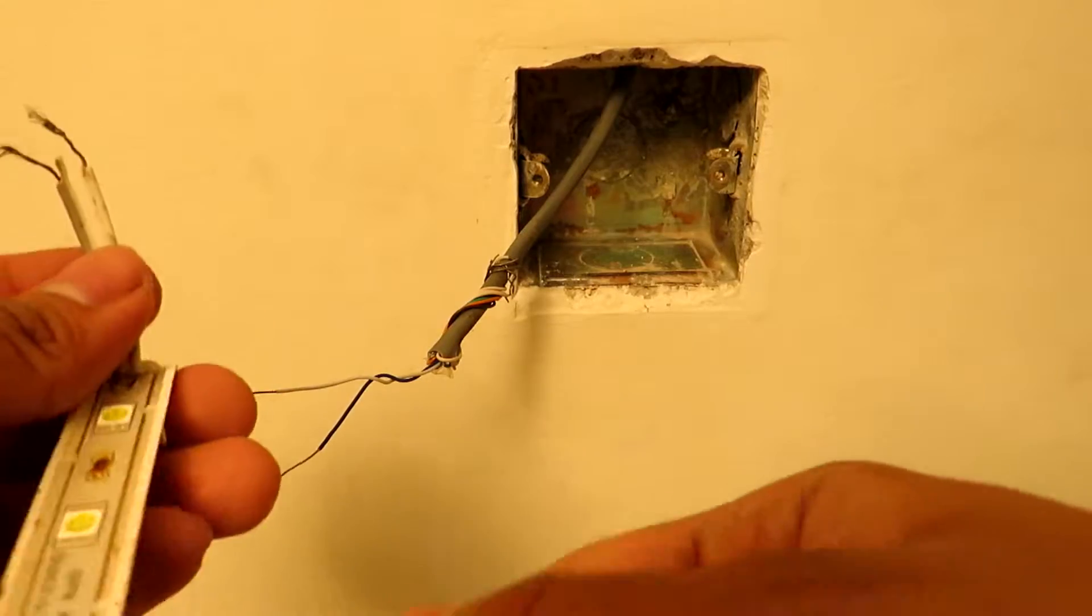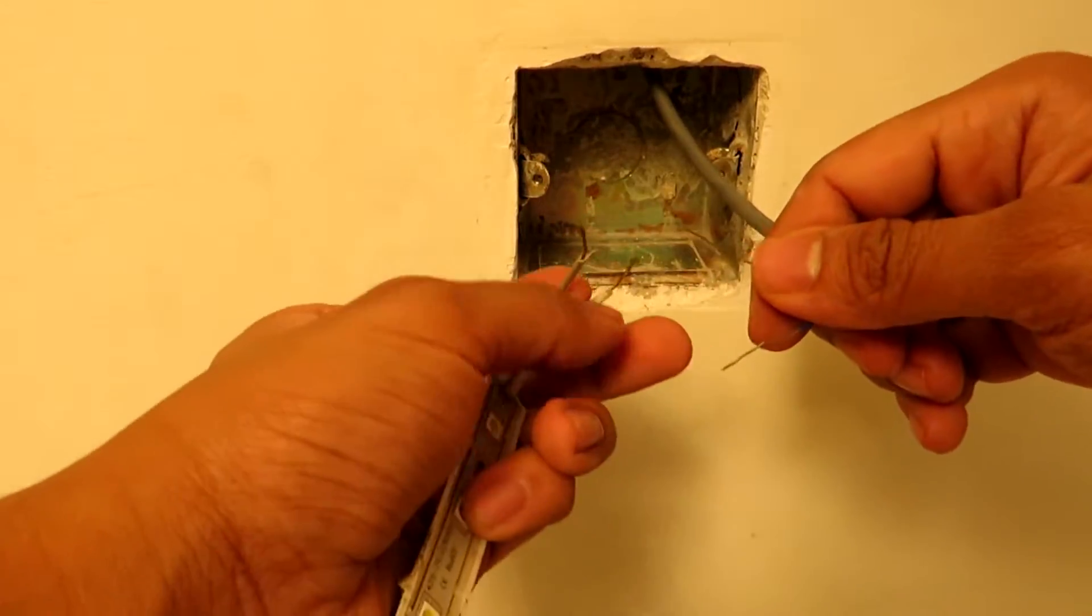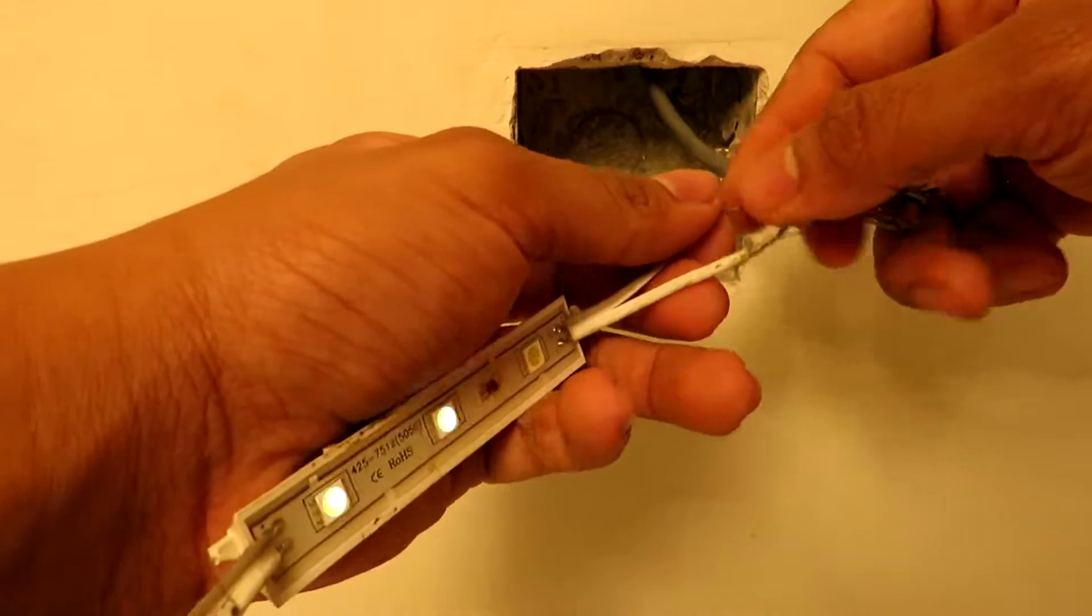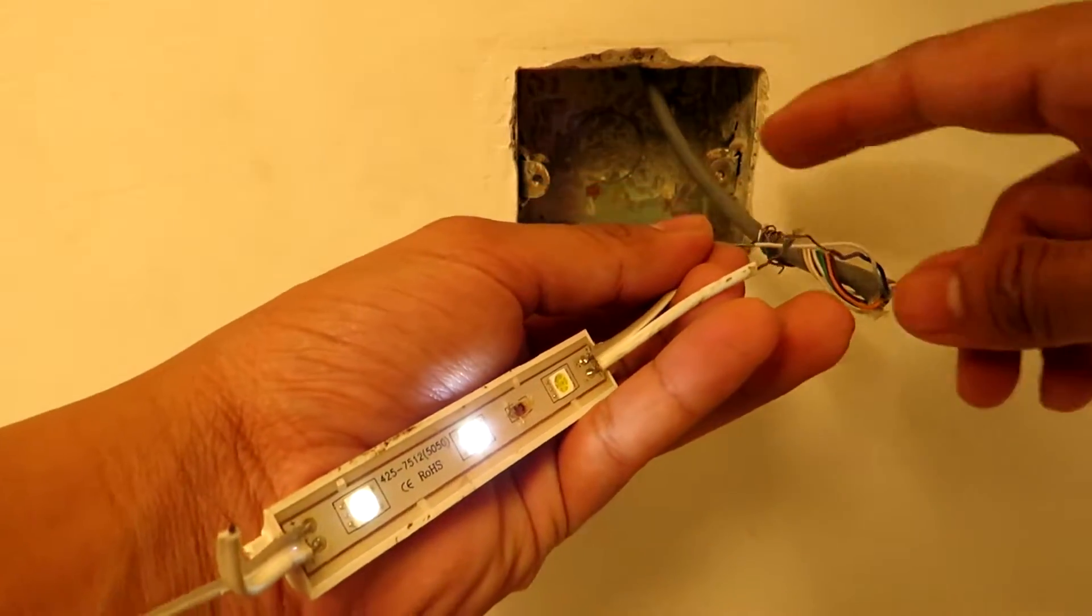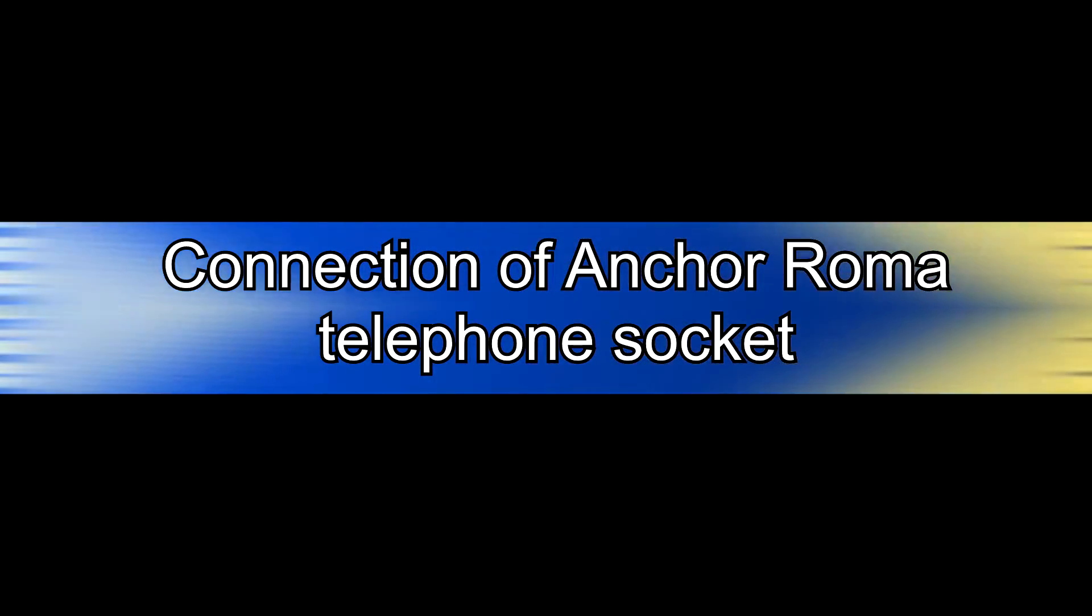Also, if you don't have a voltmeter, you can run some Indian jugaad by using a 12 volt DC light or something to check instead of a voltmeter.